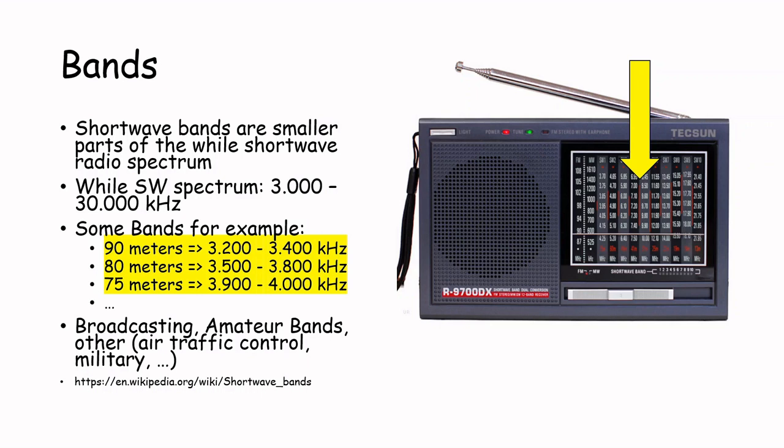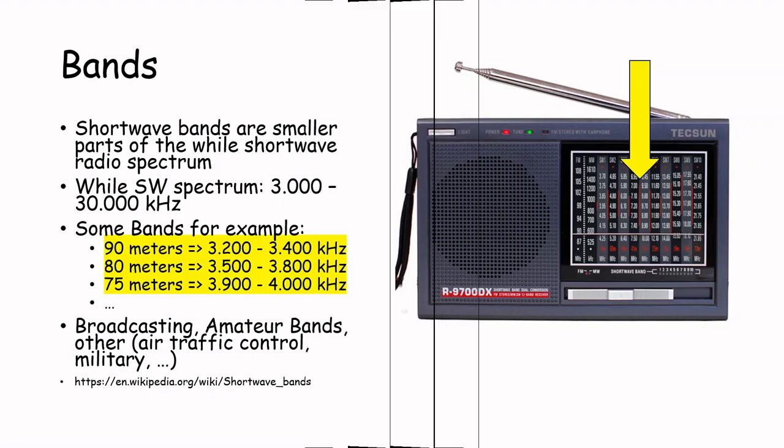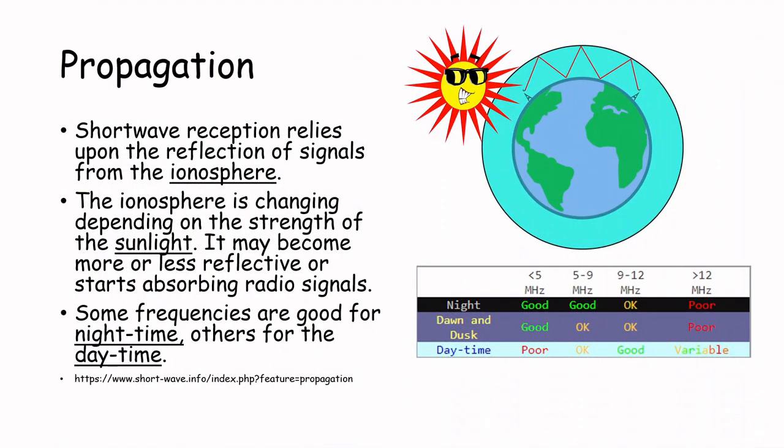More important for you is the propagation. Shortwave reception relies upon the reflection of signals from the ionosphere. The ionosphere is constantly changing depending on the strength of the sunlight. It may become more or less reflective, or may start absorbing radio signals. For this reason, some frequencies are good for night time, others for the day time.